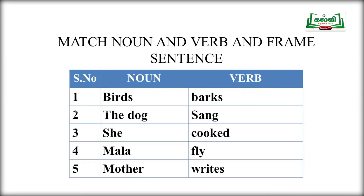Match the noun and verb and frame a sentence. Nouns given: birds, the dog, she, Mala, mother. Verbs given: barks, sang, cooked, fly, rice. Match them: Birds — fly. The dog — barks. She — cooked. Mala — writes. Mother — cooked rice.